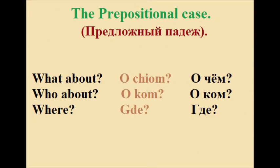Предложный падеж responds to the questions: what about — о чём, who about — о ком, where — где.